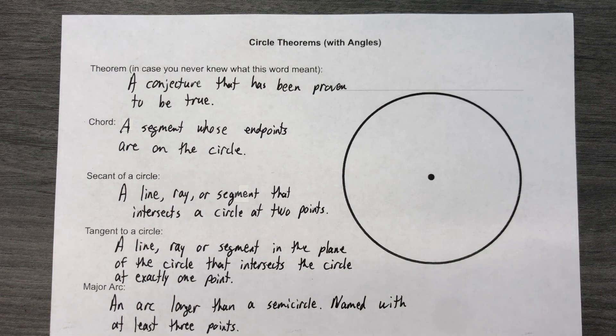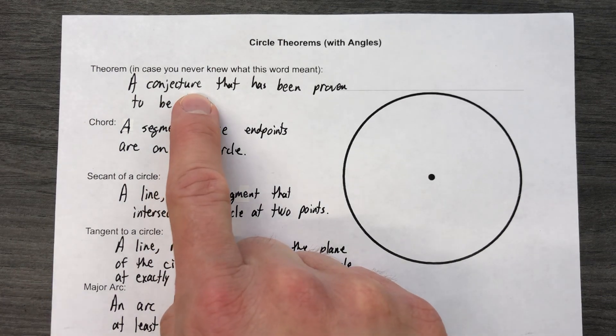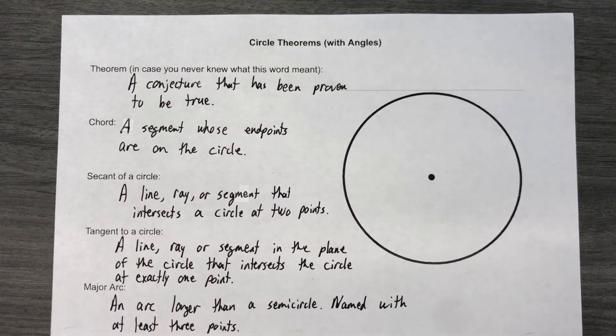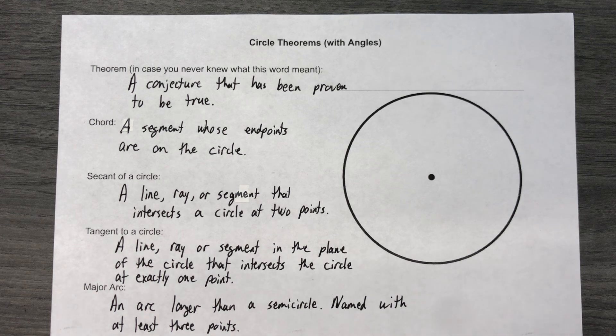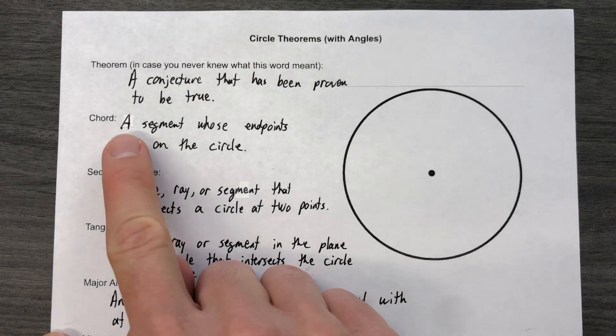First of all, a theorem, just in case no one ever told you, is a conjecture that has been proven to be true. That's gonna happen a lot in the process of this—we'll say here's the theorem, something that's been proven to be true.